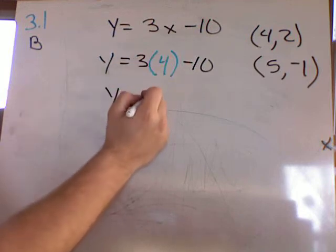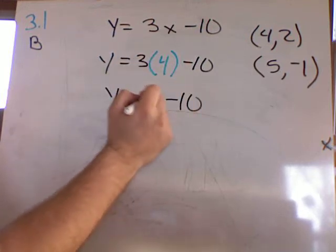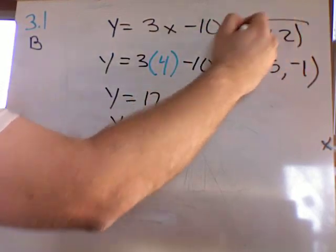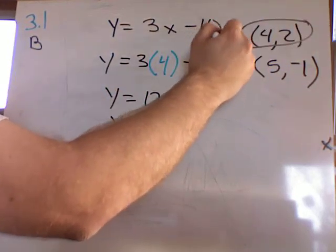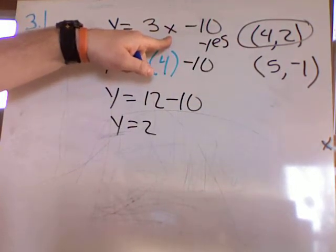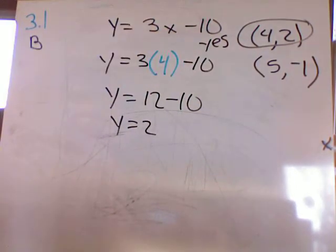So 3 times 4 is 12, minus 10. 12 minus 10 is a 2. So the answer to that is yes, that data point satisfies this line. So it's included in that line.